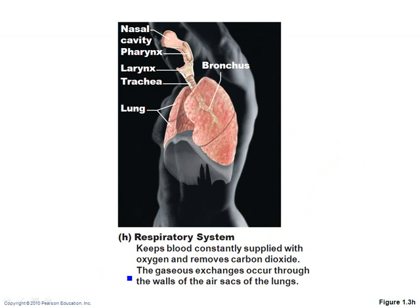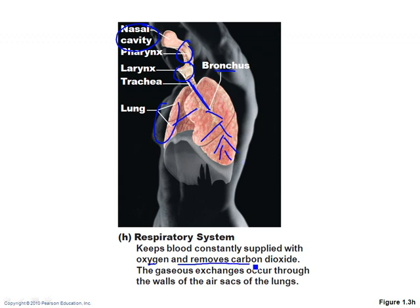The respiratory system includes your nose, mouth, pharynx (the back of your throat), larynx (the voice box where your vocal cords are), and trachea, which takes air into your lungs. The trachea branches into the bronchus, then into bronchioles throughout the lungs. The physiology is gas exchange — it allows us to bring in oxygen and remove carbon dioxide.